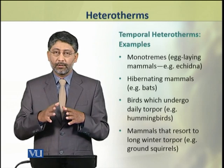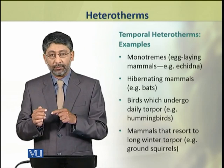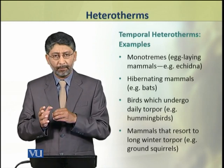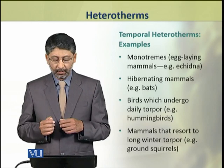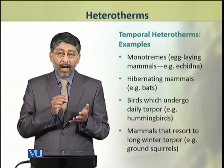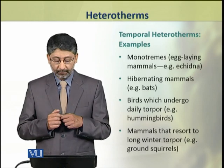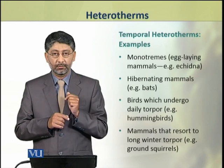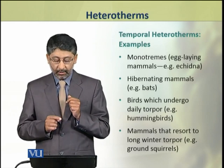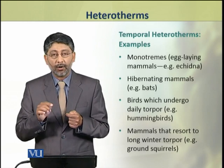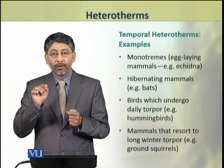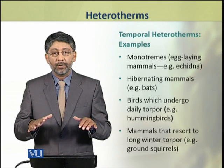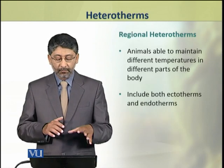We shall take a few examples of temporal heterotherms. These include monotremes, which are egg-laying mammals; many hibernating mammals, for example bats; birds which undergo daily torpor, for example hummingbirds; and mammals which resort to long winter torpor, for example ground squirrels. These are all temporal heterotherms.